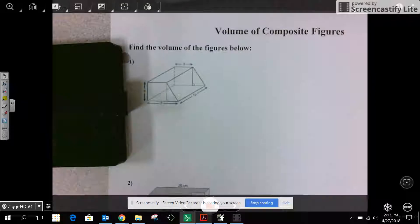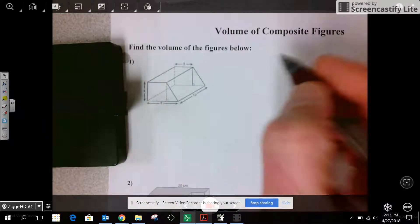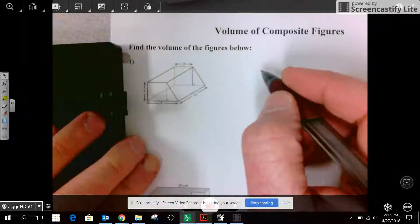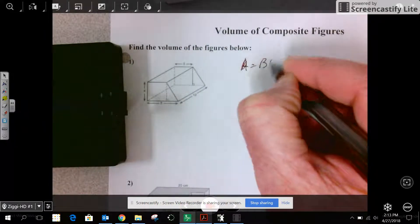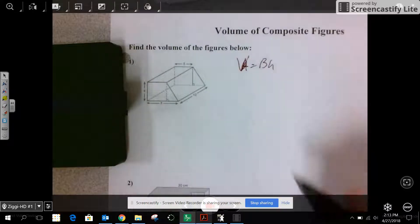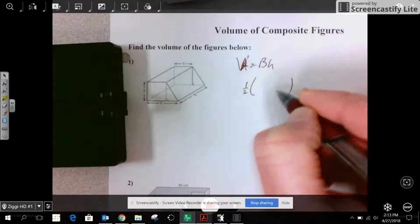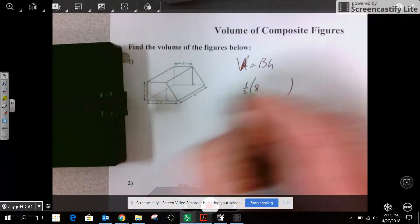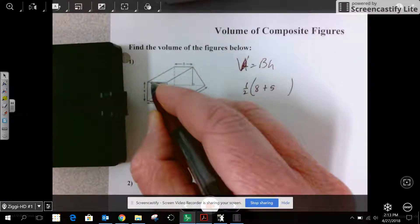Most important thing is name the shape. So the shape here is a trapezoidal prism. Find the volume of a prism. I take the area of the base times the height, or V equals. The base is a trapezoid.